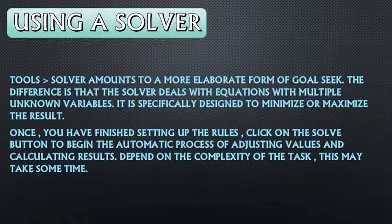Solver — what is solver? Solver is the more elaborated form of goal seek. The difference is that the solver deals with equations with multiple unknown variables. It is specifically designed to minimize or maximize the result according to a set of rules that you define. Goal seek में हम लोग एक ही cell एक बार में change कर सकते हैं, लेकिन solver में we can change multiple unknown variables. This is the difference between the two. Solver is also in the Tools option.